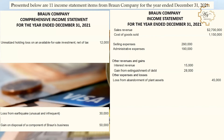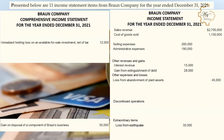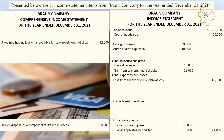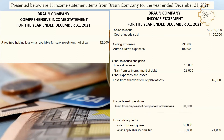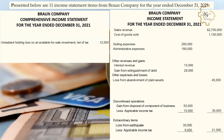The loss from earthquake (unusual and infrequent) of $30,000 is an extraordinary item, reported net of applicable income tax: $30,000 × 30% = $9,000 tax, so net extraordinary loss = $21,000. The gain on disposal of a component of Brown's business of $50,000 is a discontinued operation, reported net of tax: $50,000 × 30% = $15,000 tax, so net gain = $35,000.